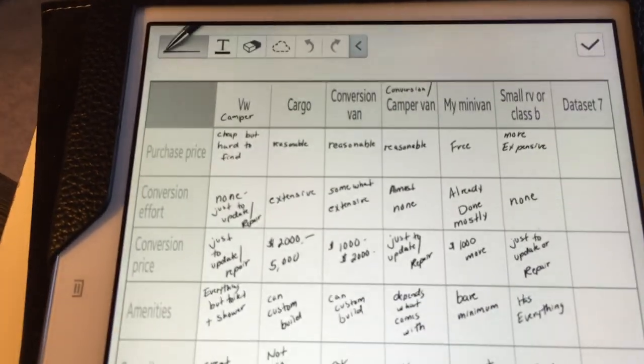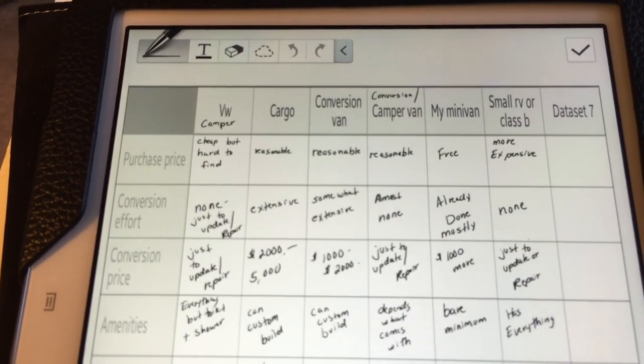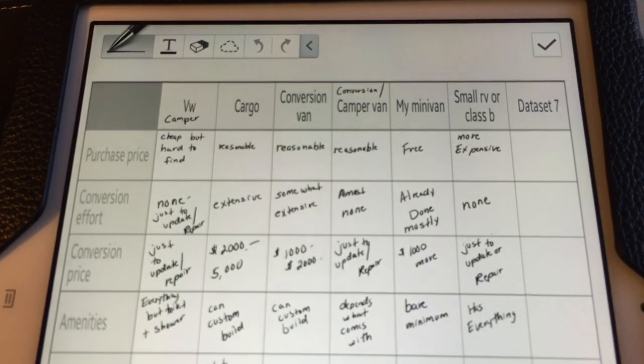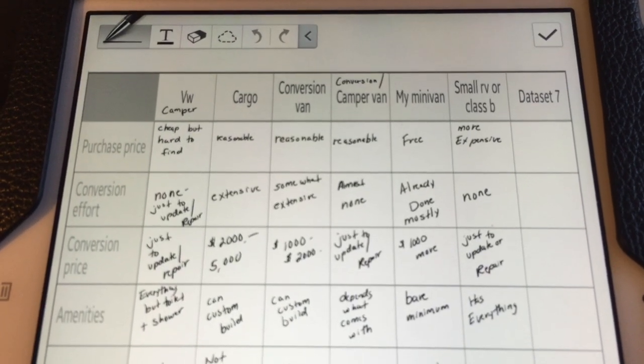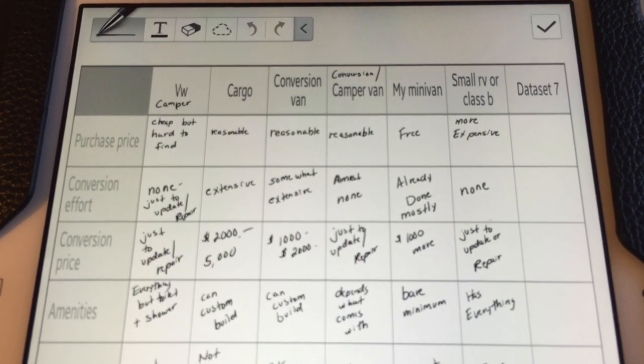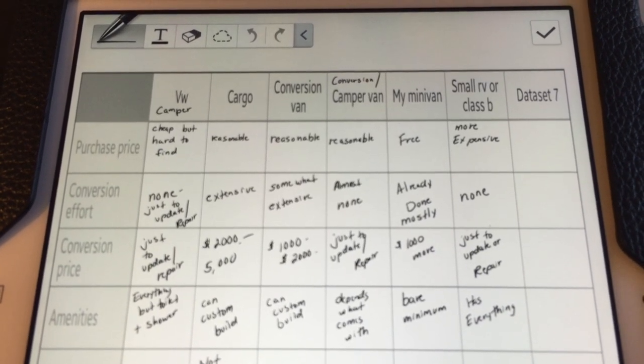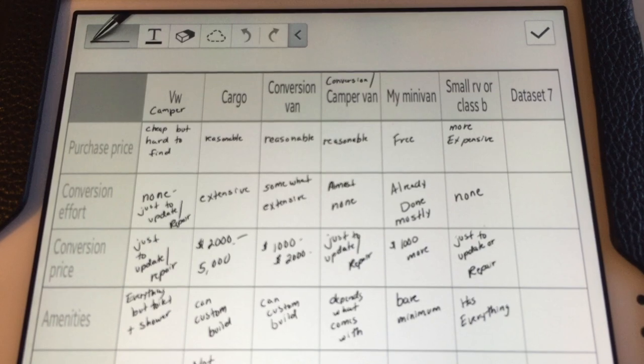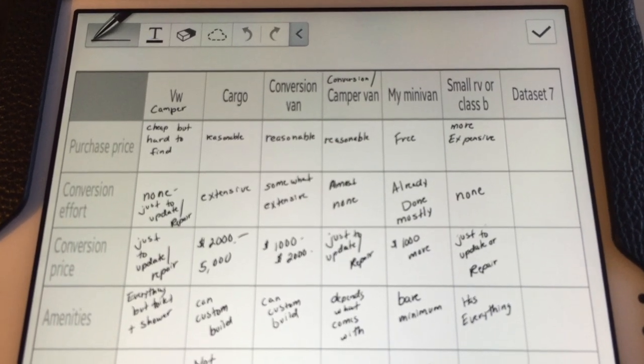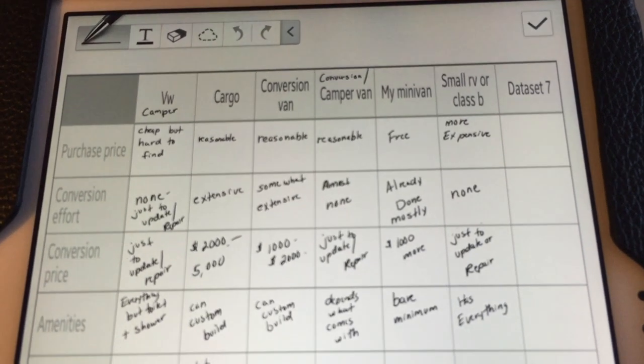So conversion effort for a cargo van is pretty extensive. Conversion van, somewhat expensive. Camper van, almost none. So I think that that's a conversion van that's pretty much has everything in it already that folds into a bed and maybe has a little kitchen area. I don't know what I was thinking when I wrote that.